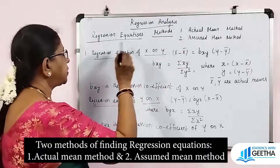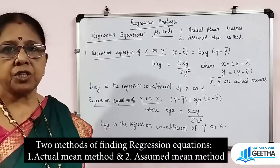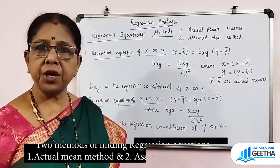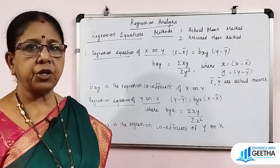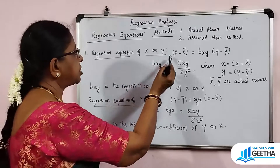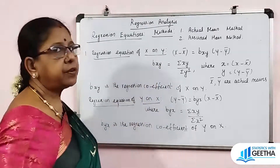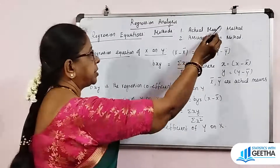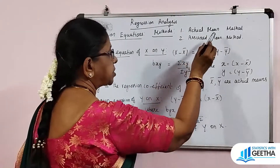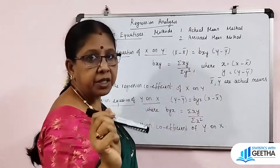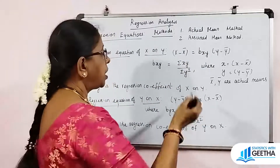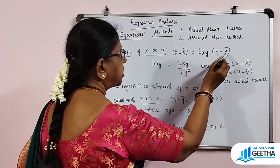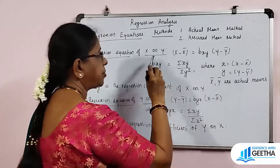First, we will find the regression equation of x on y. The regression equation of x on y is: x minus x-bar equals bxy times (y minus y-bar).